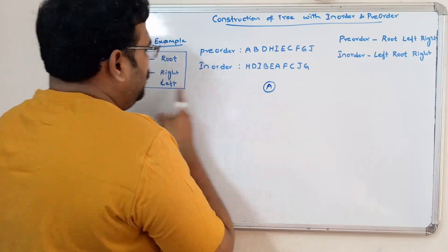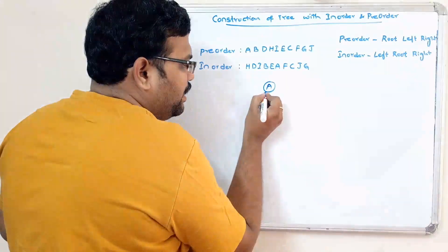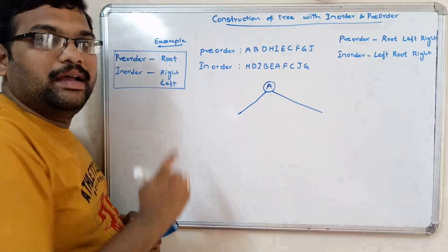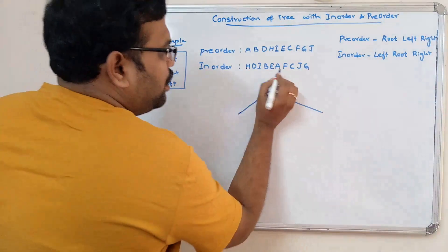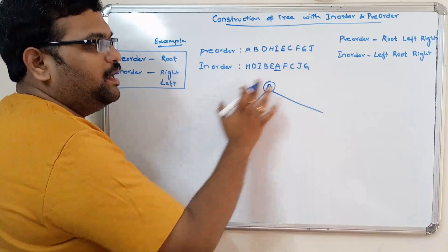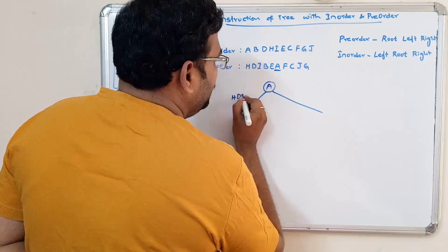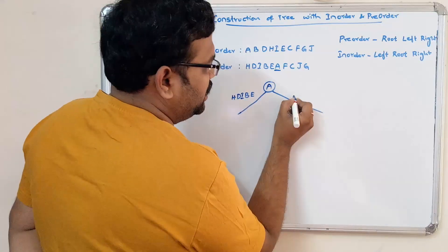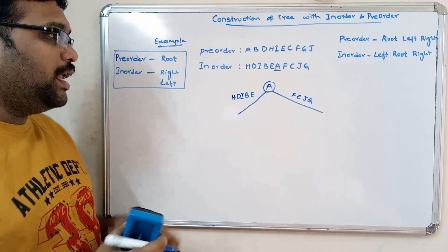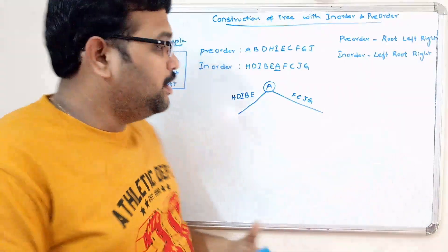Now we need to find the right and left children, which we determine using in-order. A appears in the in-order traversal — elements to the left of A form the left sub-tree, and elements to the right form the right sub-tree. The left sub-tree contains H, D, I, B, E — five elements — and the right sub-tree contains F, C, J, G — four elements.